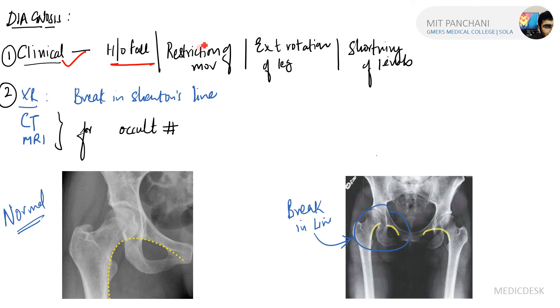On the radiographic side, on X-ray we will see a broken Shenton line. This is the normal Shenton line, and here the Shenton line is broken.